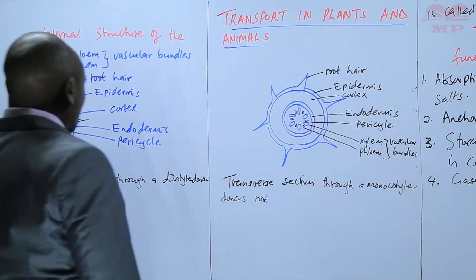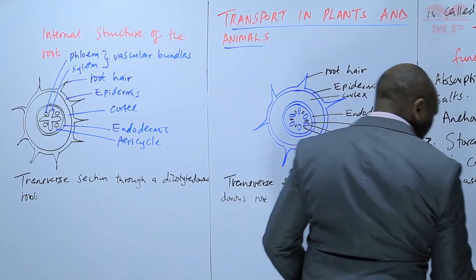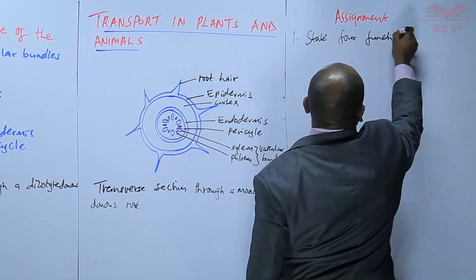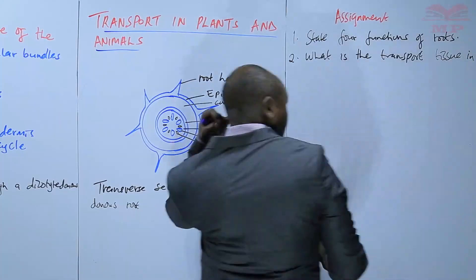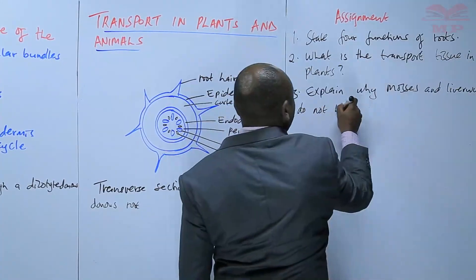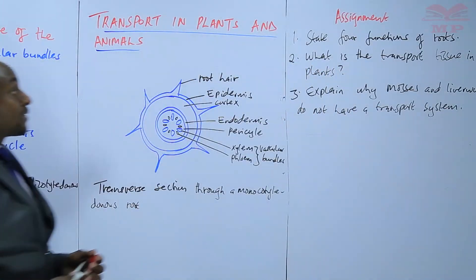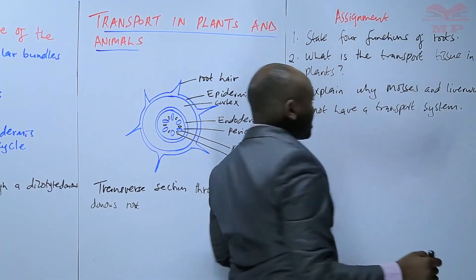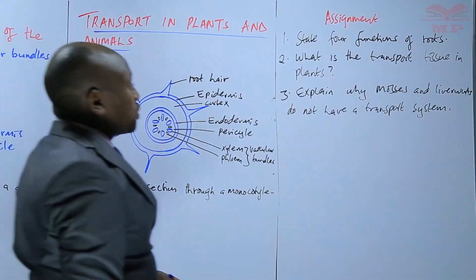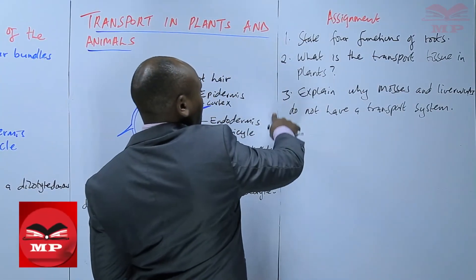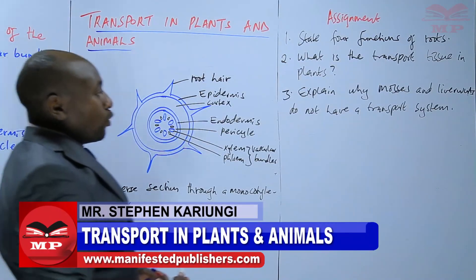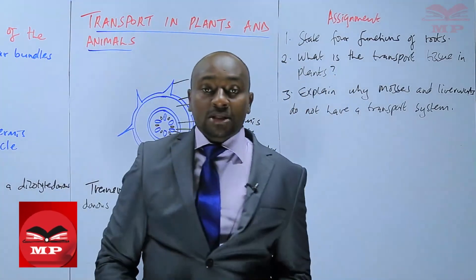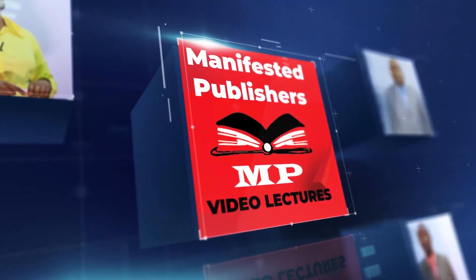We are going to have a short assignment on this. There are three questions. First, state four functions of the root. Second, what is the transport tissue in plants? And number three, explain why mosses and liverworts do not have a transport system. We are going to stop there. See you next time. Goodbye.